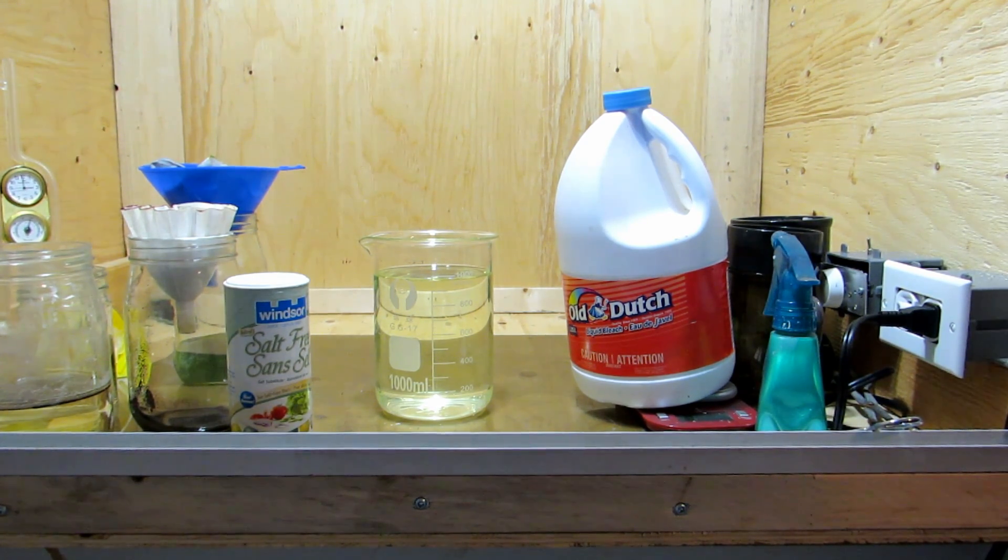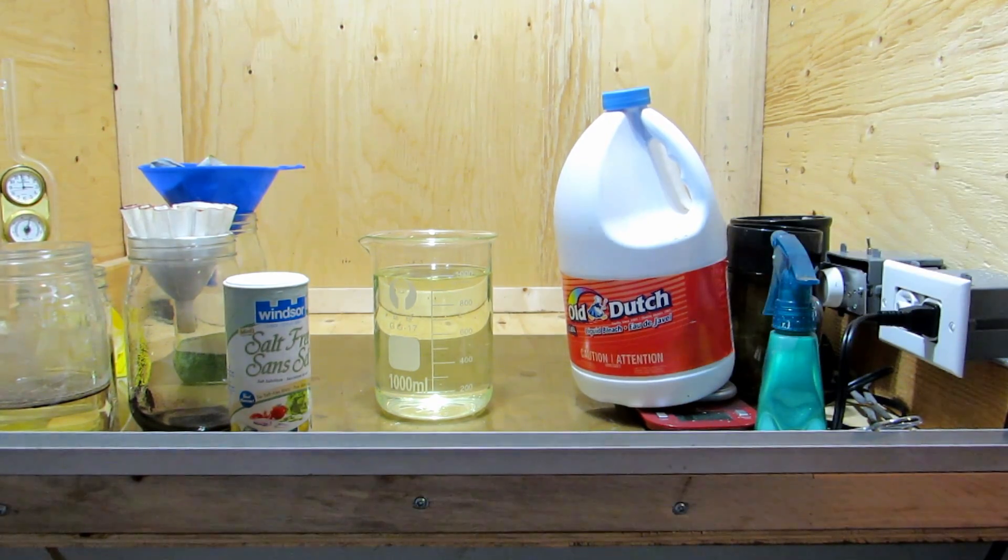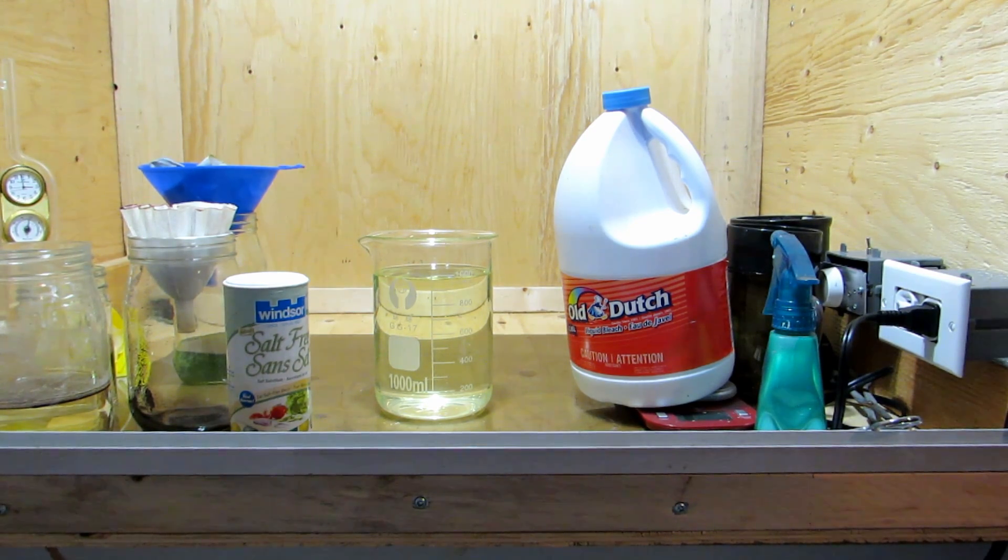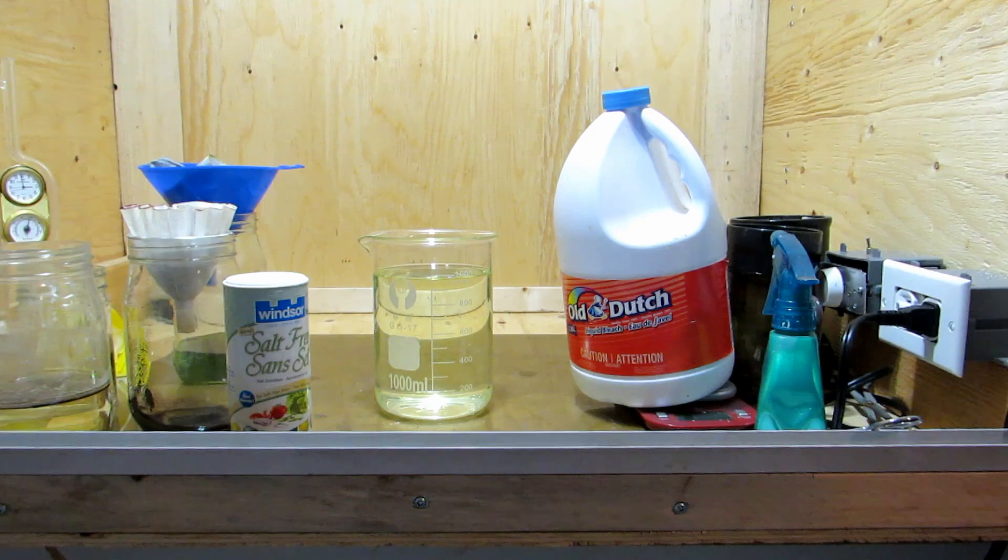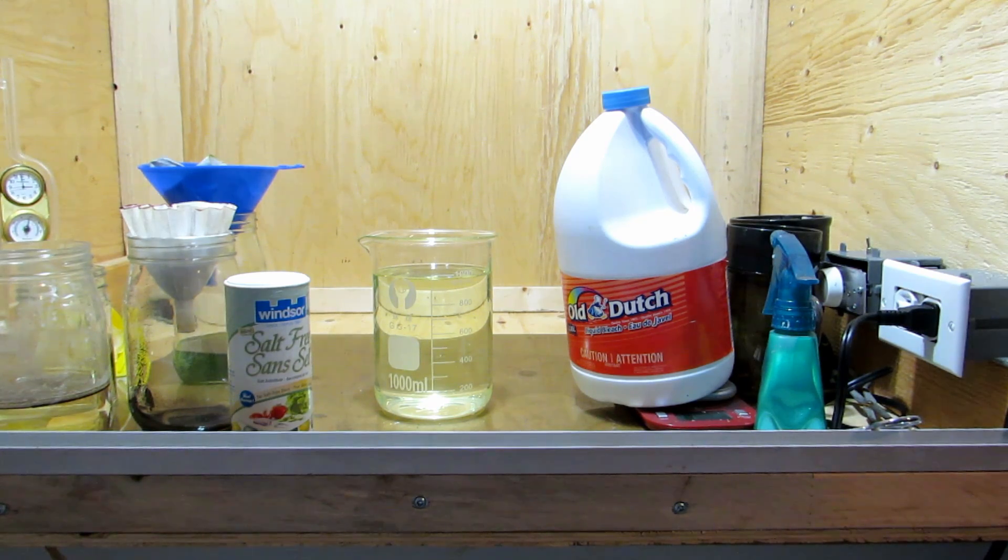We're going to boil this down until we just start to see crystals or something forming. There's no definite amount how far you have to boil it down, as most bleach is different percentages by weight. This particular one is 4% sodium hypochlorite by weight. When it disproportionates into the sodium or calcium chlorate, that's when we'll use our potassium chloride in a double displacement reaction to produce the potassium chlorate. We're going to boil this down until we just start to see crystals forming. Make sure to do this outside. Then I'll meet you back.